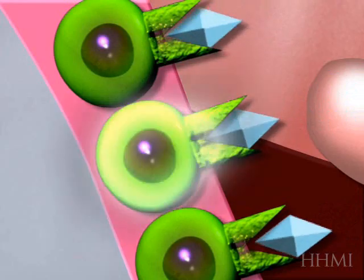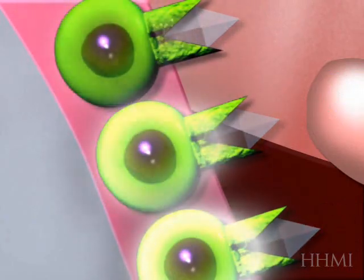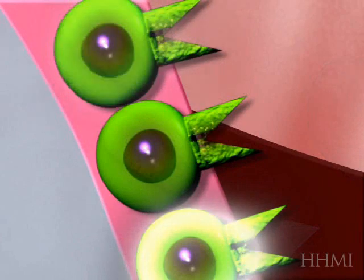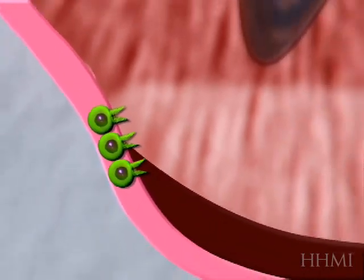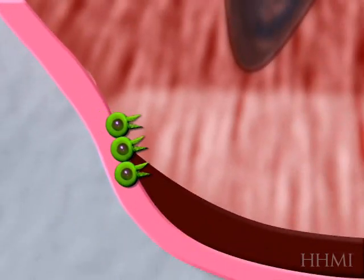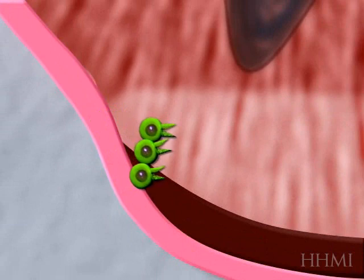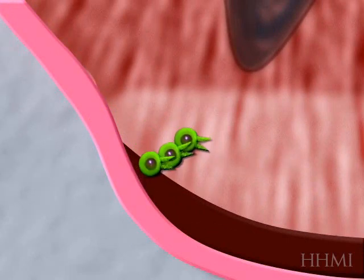or FGF, docks into epicardial cells set on the edge of the heart, and those epicardial cells, with this signal, know to march into the myocardium. So there they are, marching in.